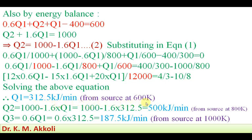Now substituting Q1 into equation 2: Q2 = 1000 − 1.6 × 312.5 = 500 kJ per minute, which is the heat supplied from the source at 800 Kelvin. Then Q3 = 0.6 × Q1 = 0.6 × 312.5 = 187.5 kJ per minute, which is the heat supplied from the source at 1000 Kelvin.